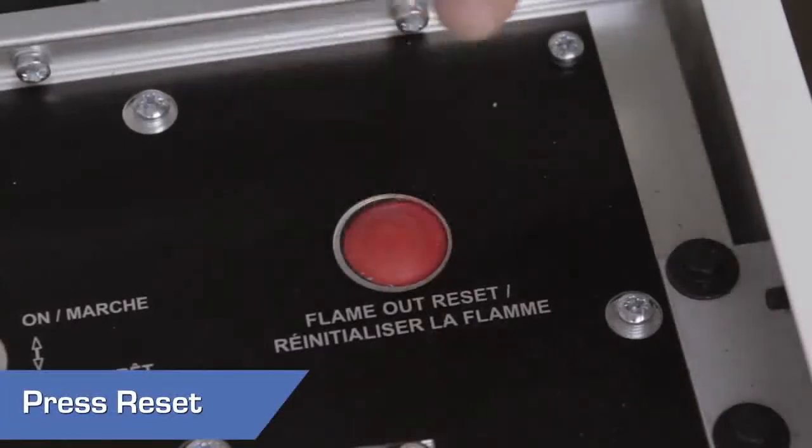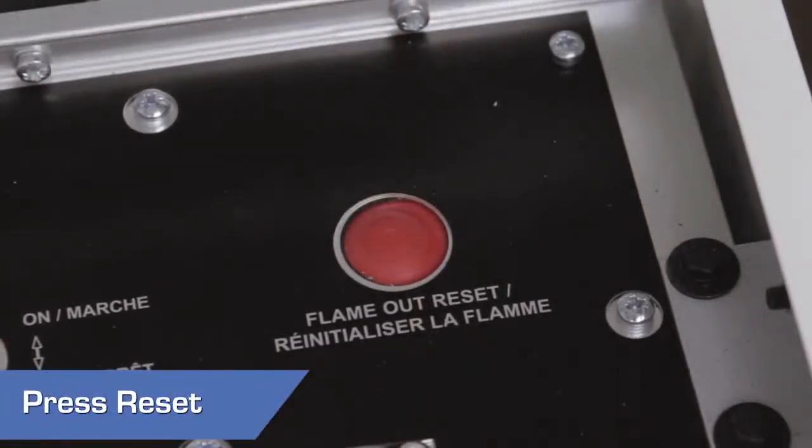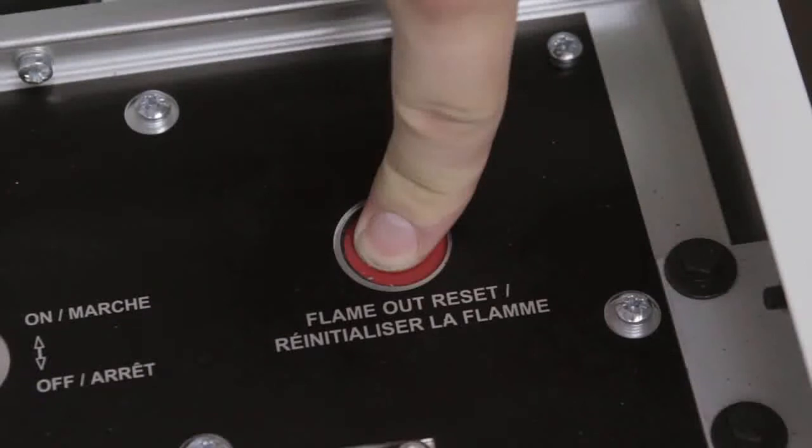Press the RESET button on the control display to clear any fault codes. Note that after 3 successive failed starts, you will need to press and hold the RESET button for 30 seconds to reset the control unit.